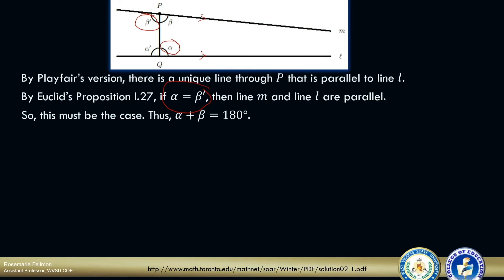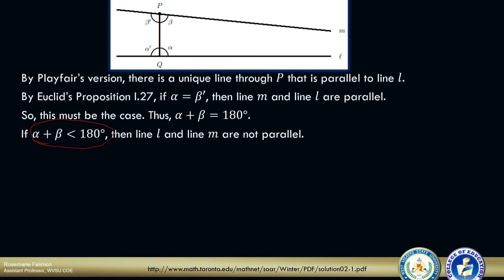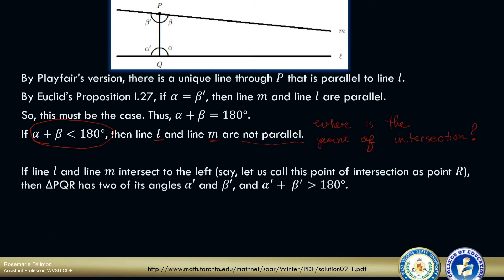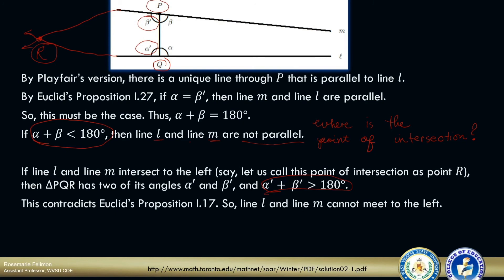So this must be the case that the lines are parallel. Thus, alpha plus beta equals 180 degrees. If alpha plus beta is less than 180 degrees, then line L and line M are not parallel. Now the question is: where is the point of intersection if these lines are not parallel? If line L and line M intersect to the left, let us call this point of intersection point R. Then we can form triangle PQR. Triangle PQR has two of its angles — alpha prime and beta prime — and alpha prime plus beta prime is greater than 180 degrees. This is a contradiction of the 17th proposition. So line L and line M cannot meet to the left.